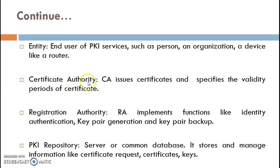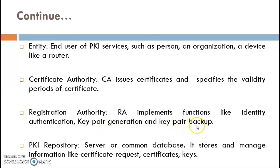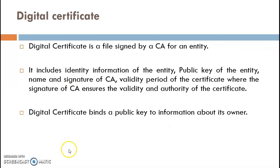The CA, or Certification Authority, issues certificates and specifies the validity period — the expiry duration — of the certificate along with the necessary information bound within it. The RA, or Registration Authority, implements functions like identity authentication of the entity, as well as public-private key pair generation and key pair backup. The PKI Repository is a server or database that stores and manages information such as certificate requests, key pair generation records, and certificates issued by the CA.